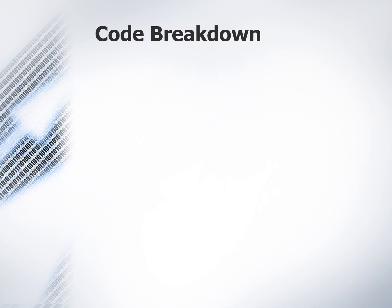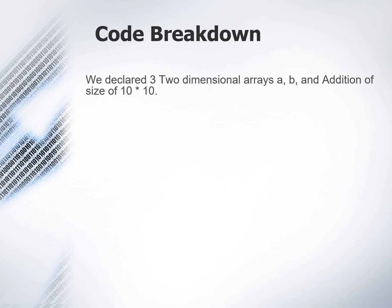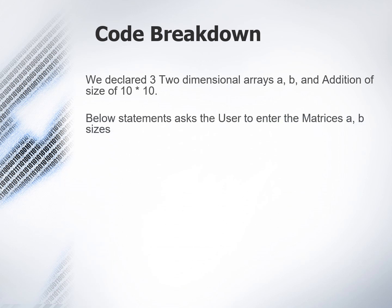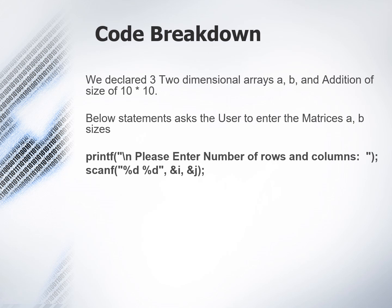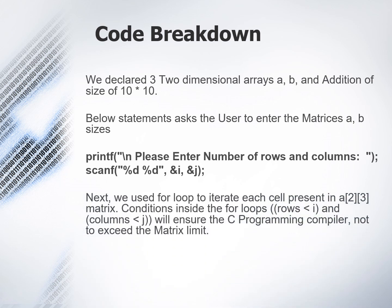Now that we have seen the code, let us discuss it in detail. Here's the code breakdown. We have declared three two-dimensional arrays A, B, and addition of size 10 by 10. The below statements ask the user to enter the matrix sizes. Next we have used a for loop to iterate each cell present in, say, a 2 by 3 matrix. The conditions inside the for loop — rows less than i and columns less than j — ensure the C programming compiler does not exceed the matrix limit. Otherwise the matrix will overflow.